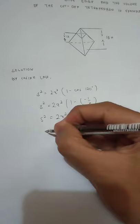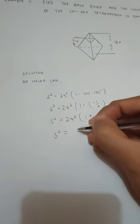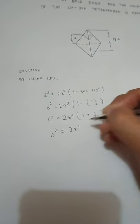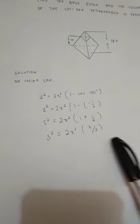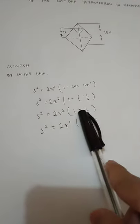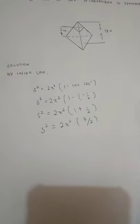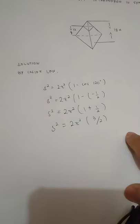We have S squared equals to 2Z squared times 3 half. Kaya naging 3 half to is 1 plus 1 half is equals to 3 over 2 or 3 half.